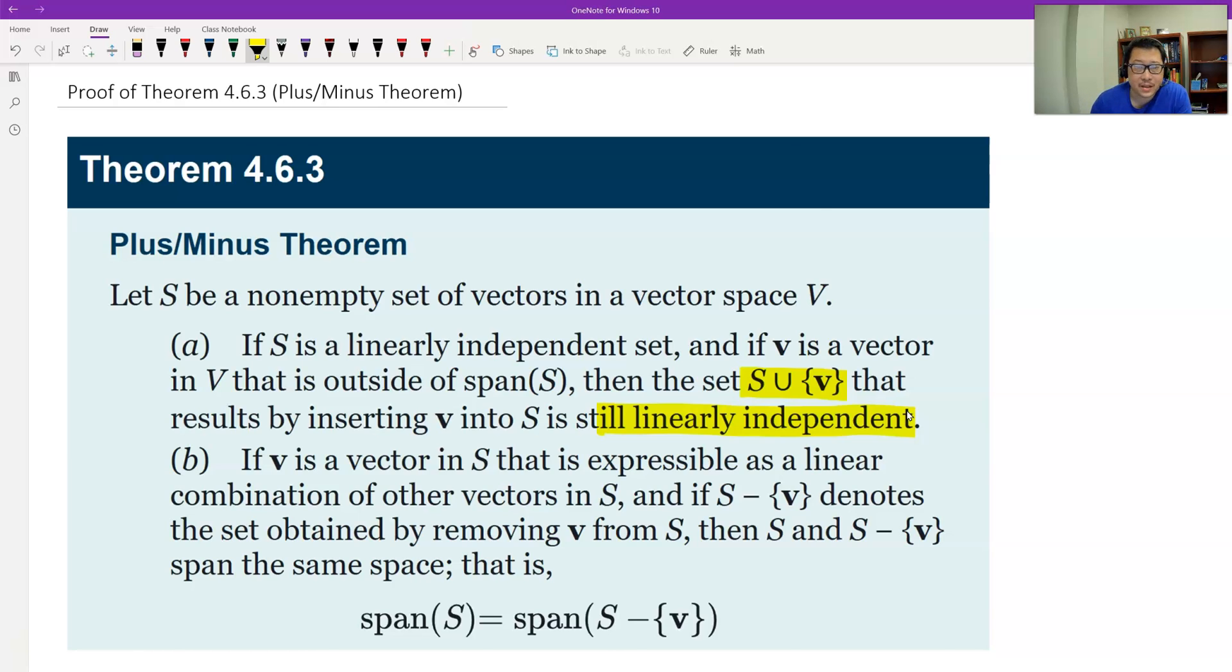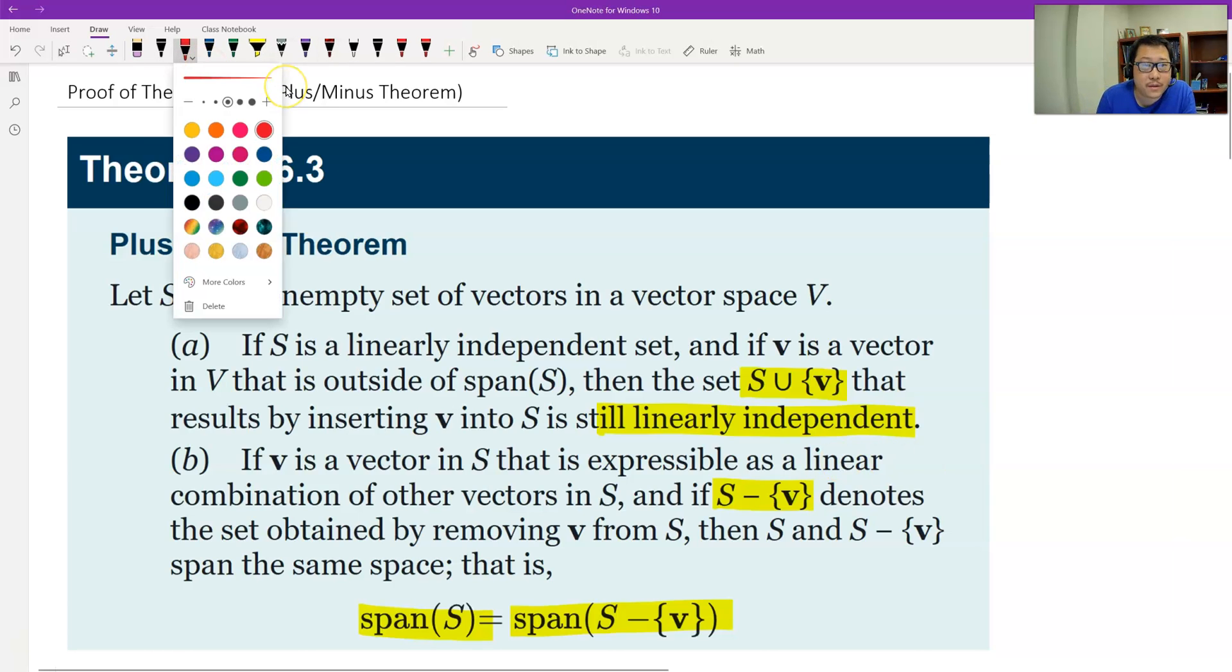And B is the minus. If V is a vector in a set of vectors and V is a linear combination of the other vectors in S, therefore we can minus the vector V from, or delete it away from S. What do we get? We still get the span after we delete, or after minus. It's the same as before. This theorem is important for us.